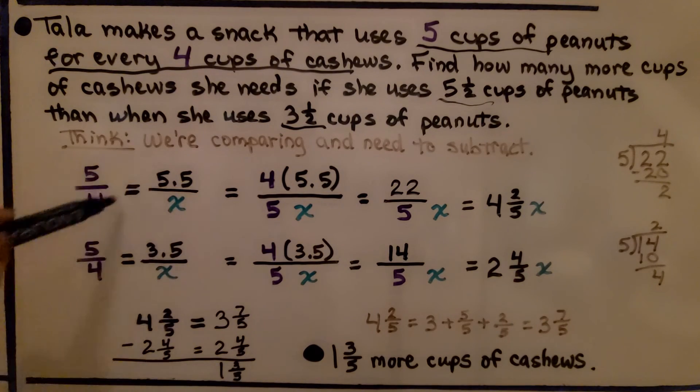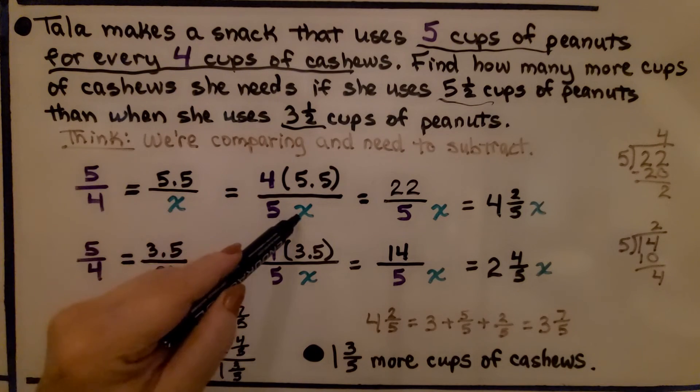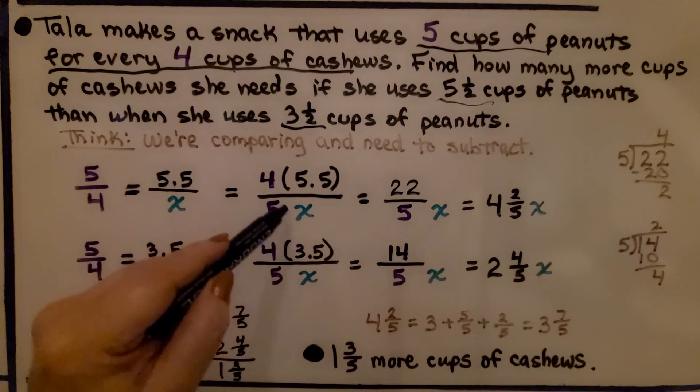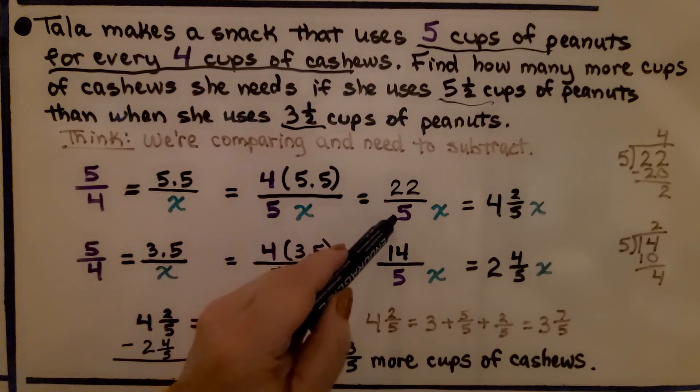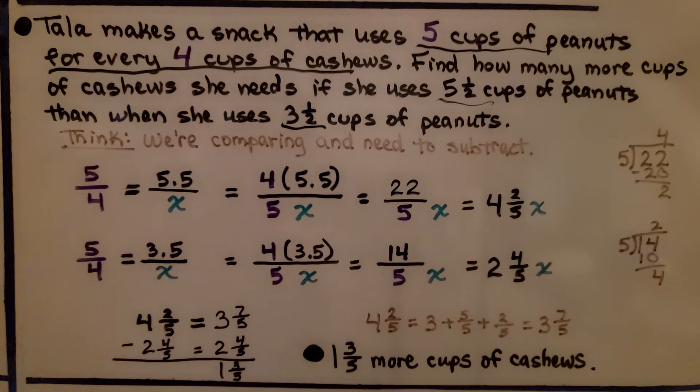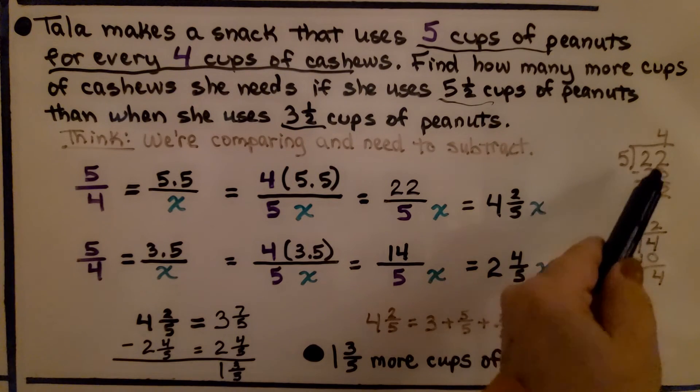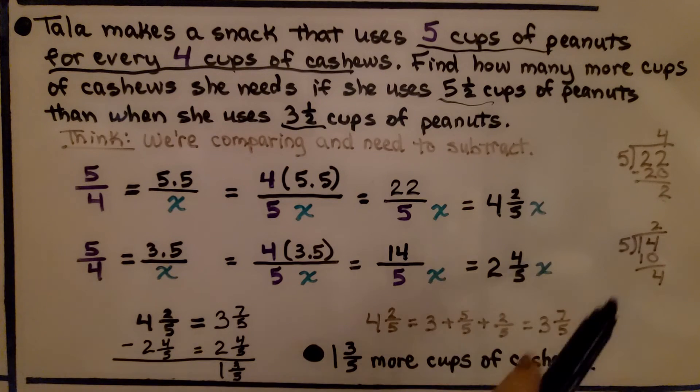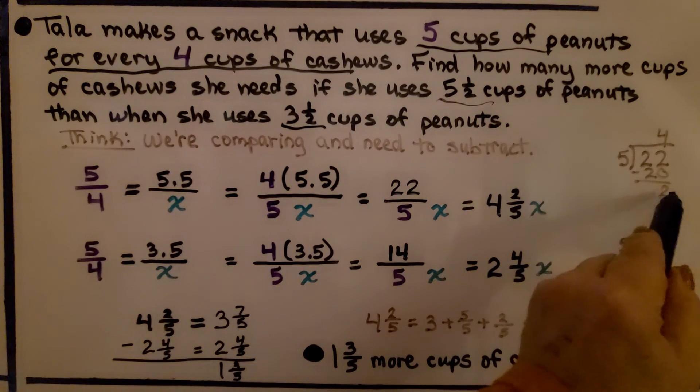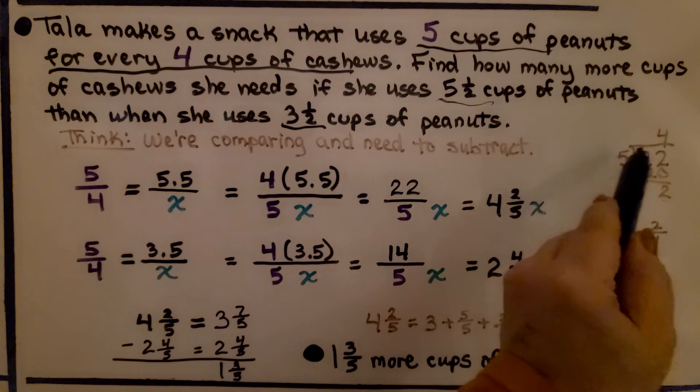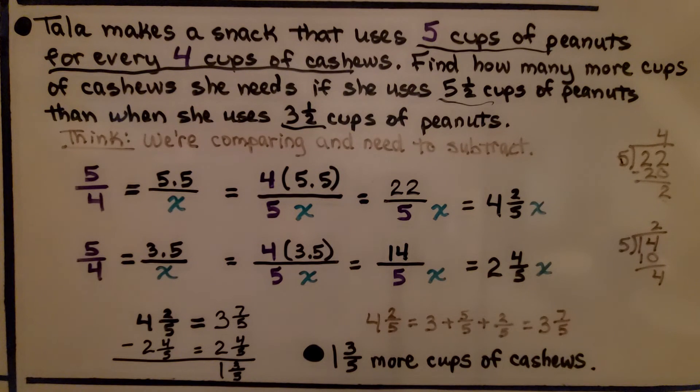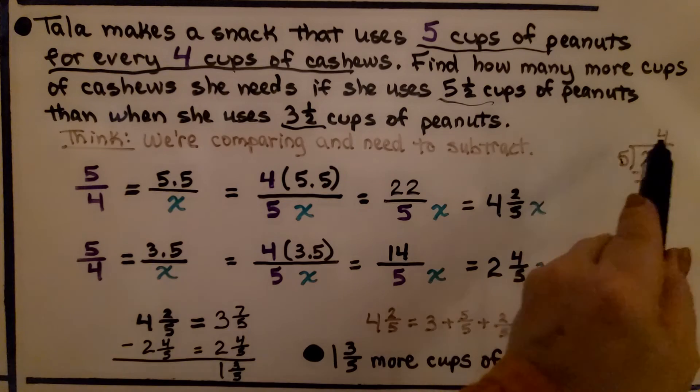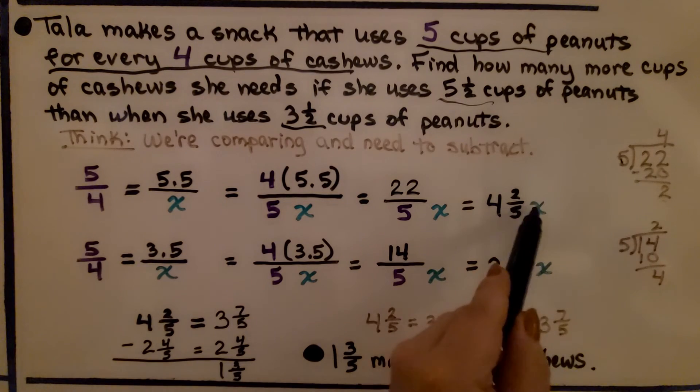We do 4 times 5.5 and get 22, and that's going to be equal to 5x. Whatever this is equal to, this is equal to. So we've got 22 to 5x, or 22 divided by 5x. We can do 22 divided by 5, and we get 4 and 2/5. Do you remember when we're doing the long division? The remainder is the numerator and the divisor is the denominator. Do you remember that from the earlier grades? So we're going to get 4 and 2/5 x.